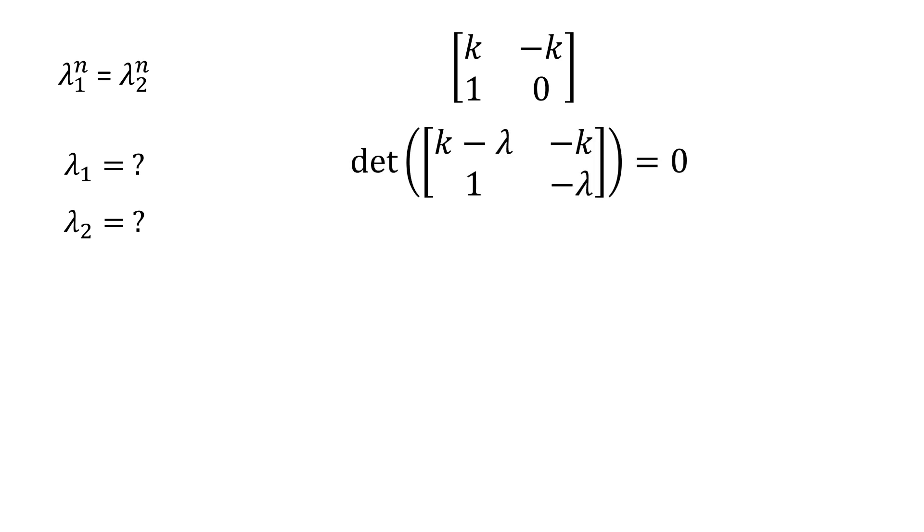The eigenvalues turn out to be the roots of a certain quadratic relating to the matrix, called the characteristic polynomial. In this case, they're 1 half k plus or minus the square root of k times k minus 4.